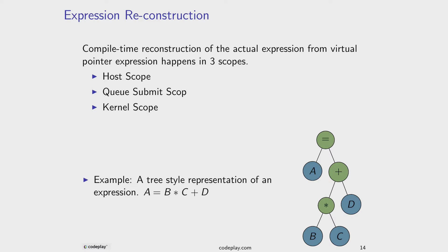When you write such an expression, instead of doing operations one by one, at runtime every thread in parallel loads every element. When the element is loaded from global memory to private memory, it performs all operations in sequence: multiply B by C, add D, then assign to A — creating one kernel instead of three separate kernels for times, plus, and equal. That kernel fusion gives a huge boost, especially when the expression tree grows larger.